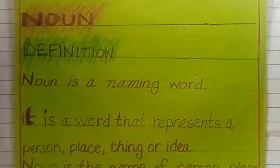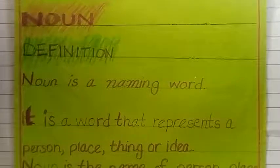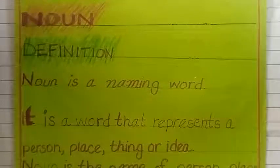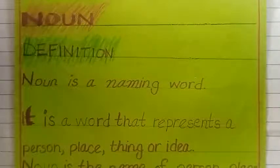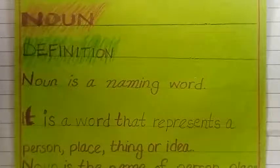There are eight types of noun: common noun, proper noun, countable noun, uncountable noun, concrete noun, abstract noun, compound noun, and collective noun. First we have to know about noun — what is a noun. Noun is a naming word. It is a simple definition of noun.